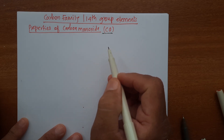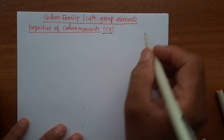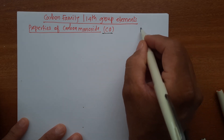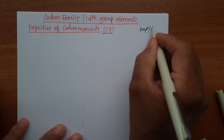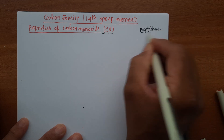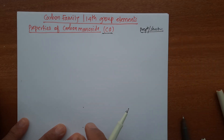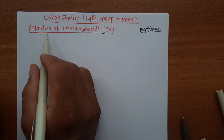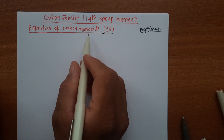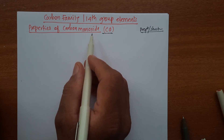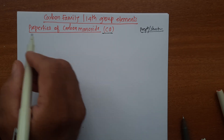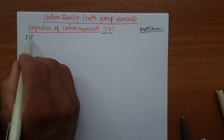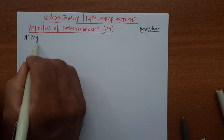In the last video, we were looking at the preparation and structure of carbon monoxide. In today's session, I want to discuss the physical and chemical properties and uses of carbon monoxide. The first point is physical properties.